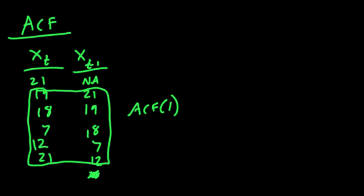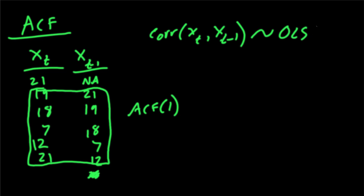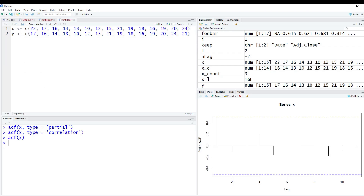This is just simple correlation — you use a correlation function and calculate the correlation between these two. Something I did not mention, which we need for the partial autocorrelation, is that the correlation of x of t and x of t minus 1 is going to be similar — not the same, but similar — to an OLS regression of x of t on x of t minus 1. Let's go into R and do a quick calculation. x is going to be x of t in our example and y is going to be x of t minus 1.